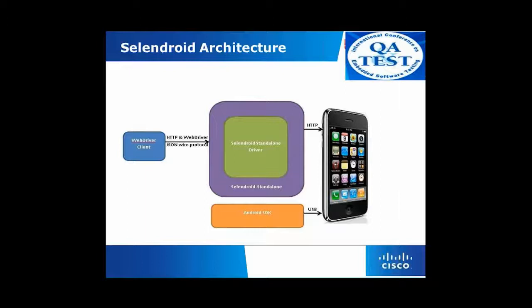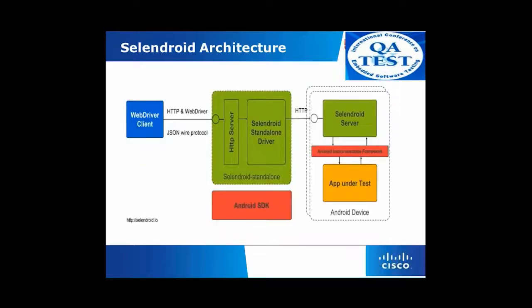Here we see the architecture. Moving on to the Cylindroid architecture, we have multiple layers: the WebDriver client, the Cylindroid standalone driver, the Cylindroid standalone itself, and the app under test which comes under the mobile handle. The WebDriver client talks internally to the Cylindroid standalone server, which has the driver to the Cylindroid standalone, which will internally talk to the APKs or apps under test on the hardware device. The JSON Wire Protocol is used between the WebDriver client and Cylindroid standalone driver on the Cylindroid standalone server, which internally talks to the Cylindroid server to talk to the app under test on the Android device or simulator.